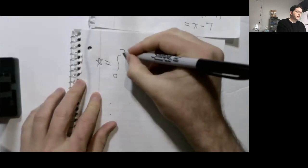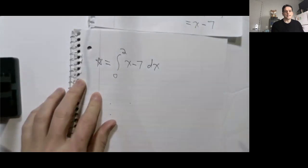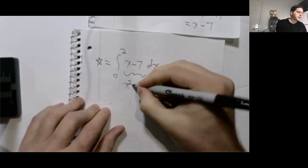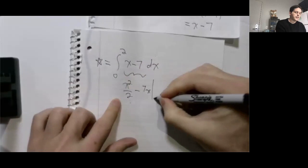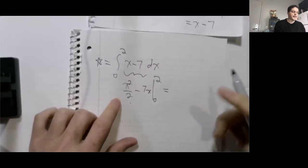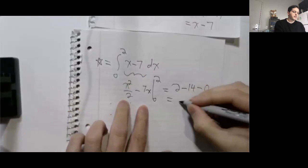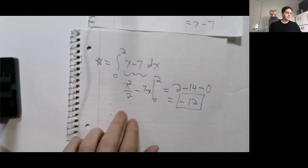We've discovered that the integral equals the integral from 0 to 2 of x minus 7 dx. An antiderivative is x²/2 minus 7x. Evaluating from 0 to 2: when we plug in 2 we get 4/2 minus 14, which is 2 minus 14. When we plug in 0 we get 0. So the final answer is minus 12.